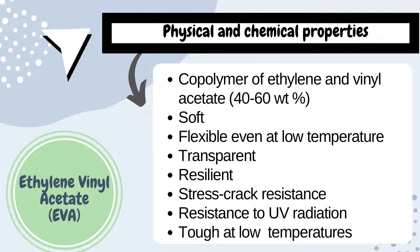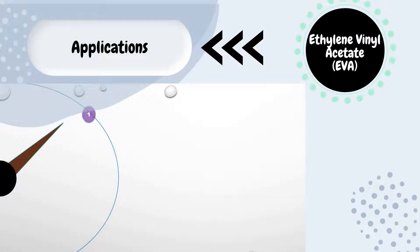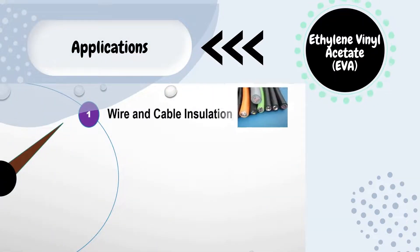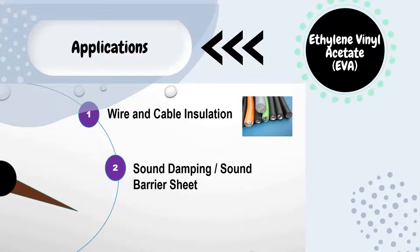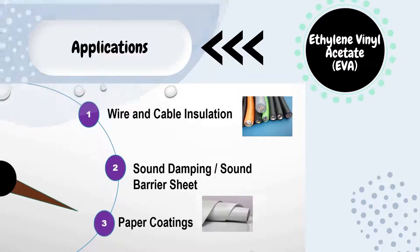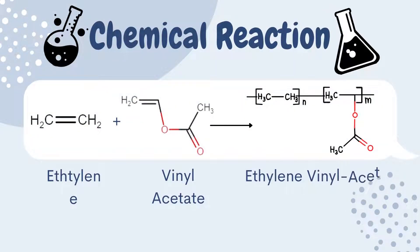EVA is tough at low temperatures. It has been used in many industrial applications such as the wire and cable industry, sound damping or sound barrier sheet, and paper coating industry. The chemical reaction equation shows ethylene reacting with vinyl acetate to produce ethylene vinyl acetate.